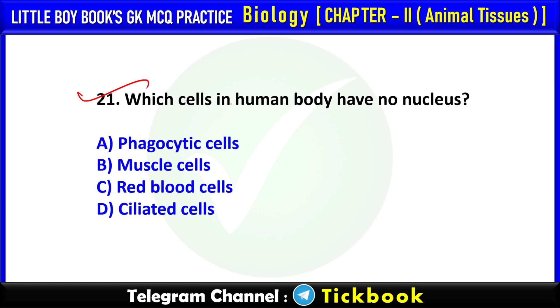Q21. Which cell in the human body has no nucleus? Option number C: Red blood cells.